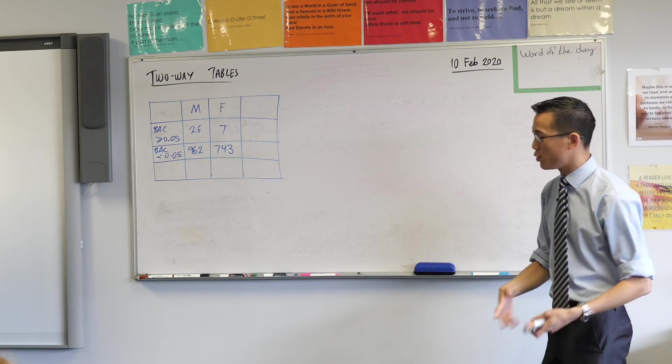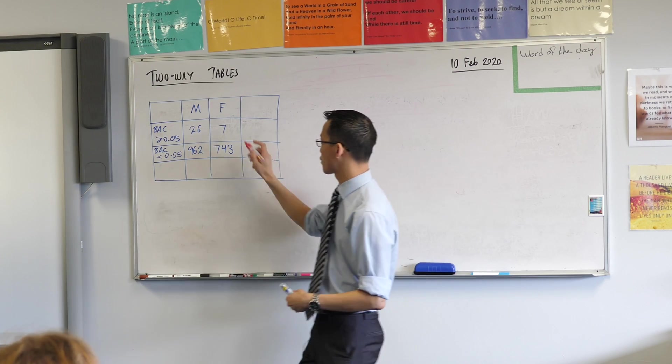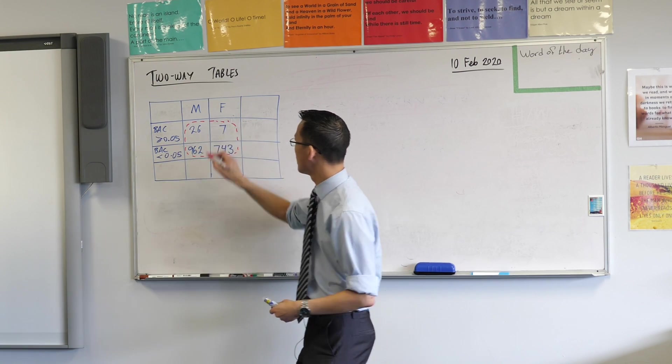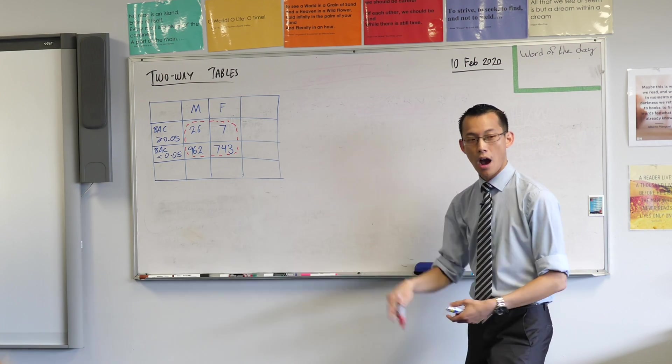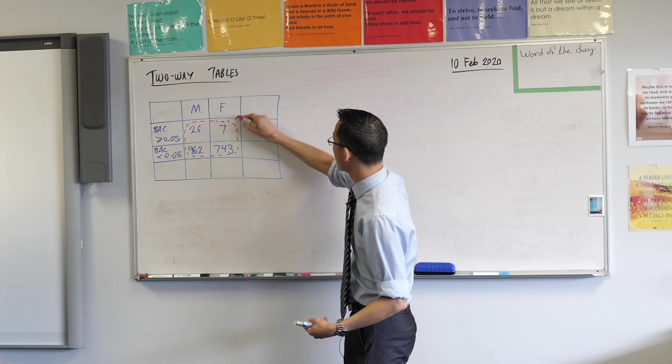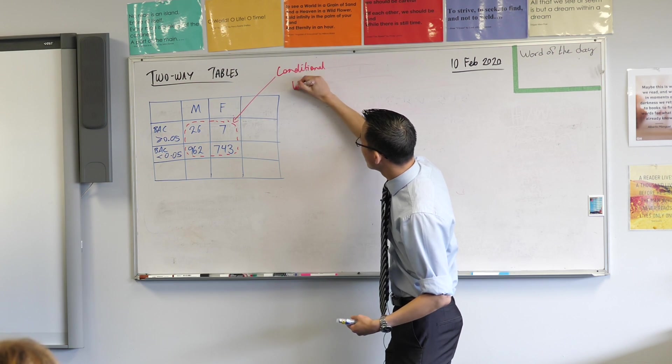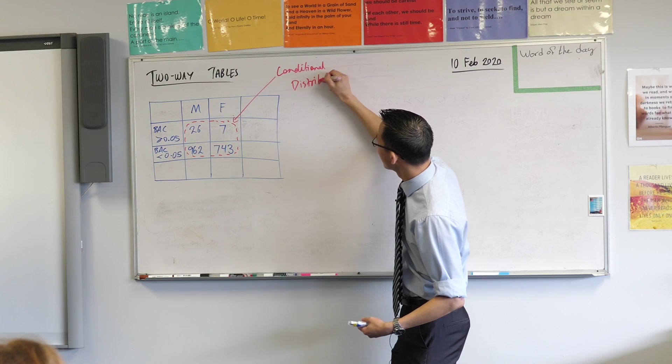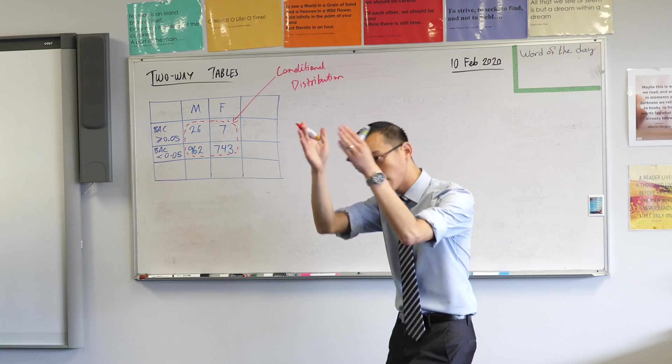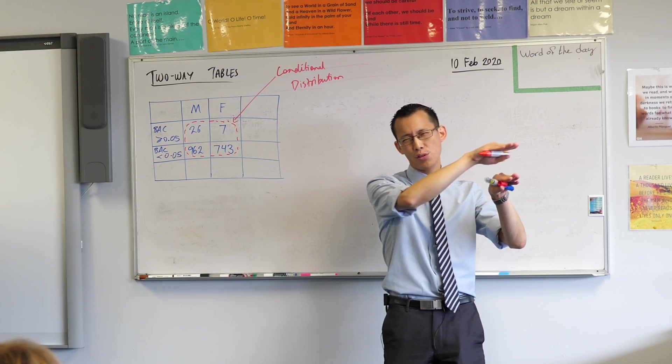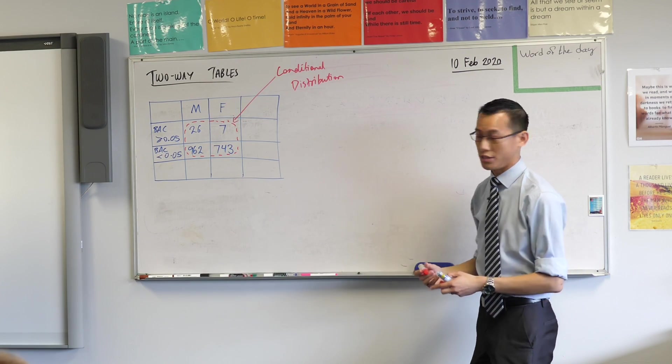Now, a two-way table is useful because you can take these numbers and we call these, by the way, here's the first bit of extra technical language here. We call these guys a conditional distribution. These four numbers are a conditional distribution because they show us the frequency, as the name suggests, based on particular conditions. Show me the frequency if it's only the female drivers I'm interested in. Show me the frequencies if it's only the ones over the limit that I'm interested in. So we call each of these conditional distributions.